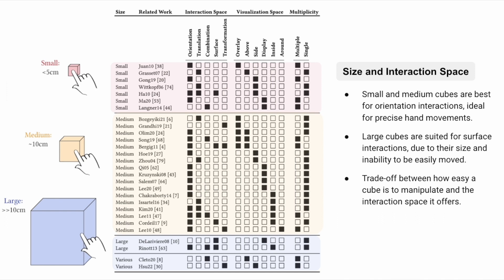The size of a cube can also influence the choice of the optimal interaction space. Small and medium-sized cubes are often paired with orientation interactions. On the other hand, the larger surface area and immobile nature of the larger cubes make them ideal for surface-based interactions. As a result, a trade-off exists between ease of manipulation and the available surface area based on the cube size.